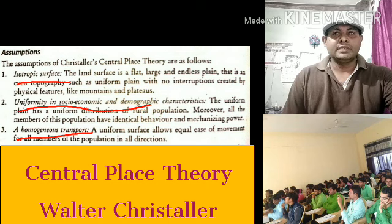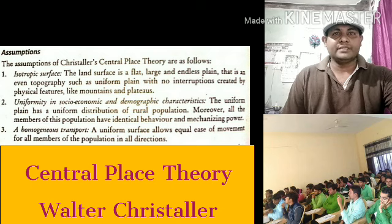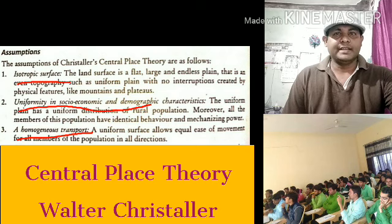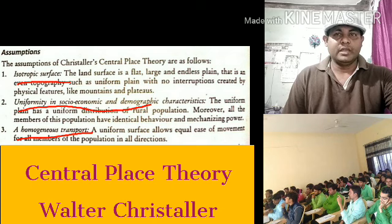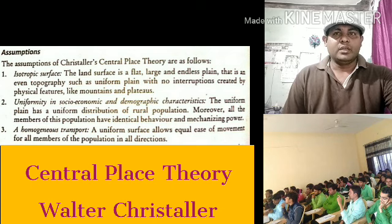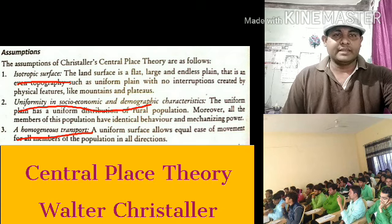This theory's main assumptions according to Christaller: the first is the isotropic surface. The land surface is a flat, large, and endless plain with even topography — a uniform plain with no variation created by physical features like mountains and plateaus.